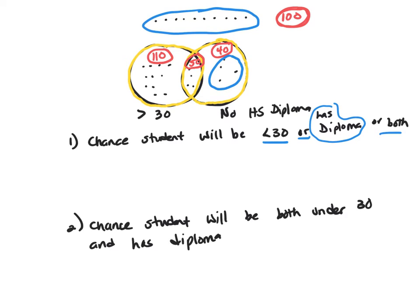Okay, that's going to be these people. So I've covered my bases there. That's 100 plus 110 plus 40 over total number of students, which is 300. And that's going to be 250 over 300. And that's going to be 5 to 6.